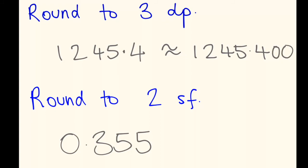The only numbers you can add are zeros, otherwise it won't be correct. So this number rounded to three decimal places is actually 1245.400. The point of that being, if you're comparing numbers and they're all rounded to three decimal places, you can see that that number is actually 1245.4 and there's nothing after that four.